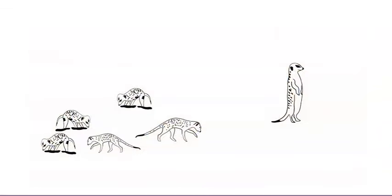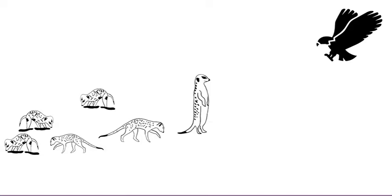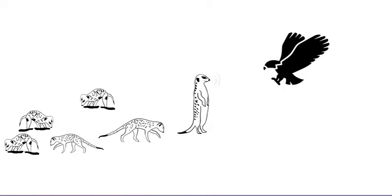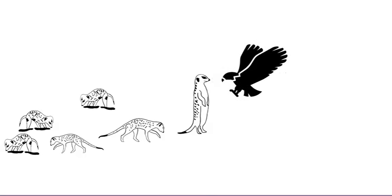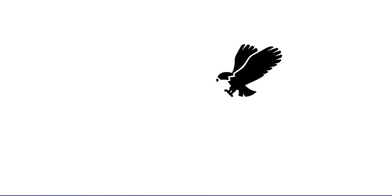They seem to be searching for something. While the sentinel meerkat is on lookout duty, the other meerkats search for insects, plants, and other food. These meerkats are called foragers. When the sentinel meerkat sees a predator, it gives a warning cry to alert the other meerkats. As the predator gets closer, the cry becomes more urgent — that almost sounds like an alarm. And as the predator gets even closer, the meerkat makes a completely different noise, almost like a dog barking. When the foragers hear these warning sounds from the sentinel, they run away.